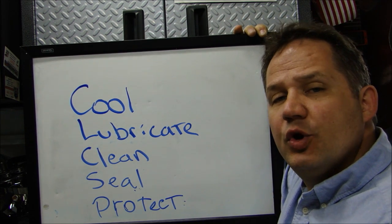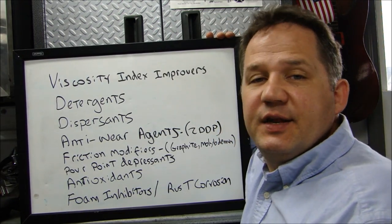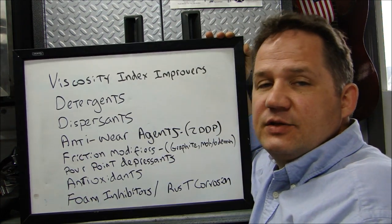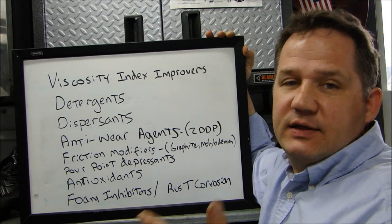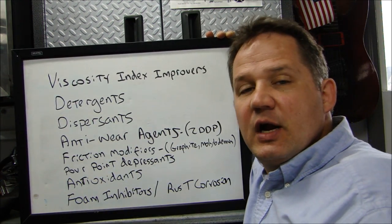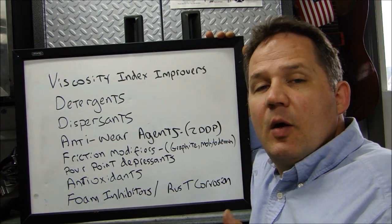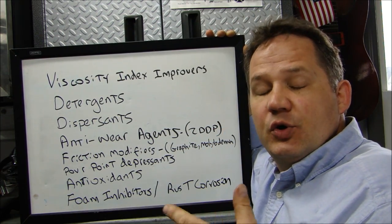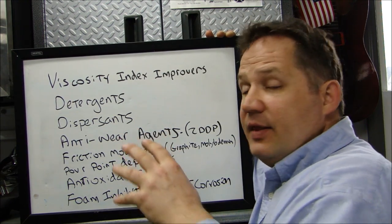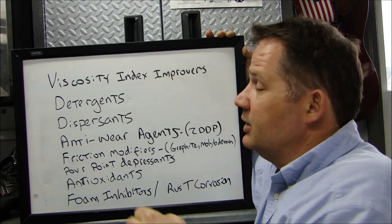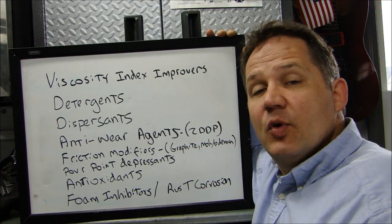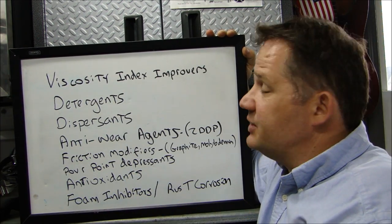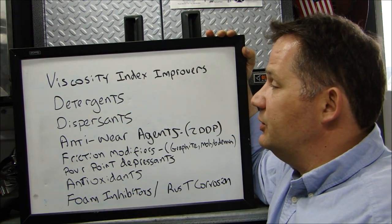Now let's talk about oil additives. First is a viscosity index improver — something put in the oil to prevent it from breaking down as temperature increases. Second are detergents — not household scrubbing detergents, but additives that help prevent rust, corrosion, and buildup due to high temperature. Third are dispersants: as oil picks up dirt particles through the engine, those particles would coagulate and form sludge. Dispersants keep them from clumping so they flow through the filter instead of building up as sludge. Sometimes a detergent and dispersant work together as a combination.